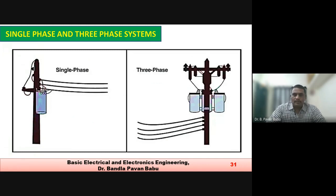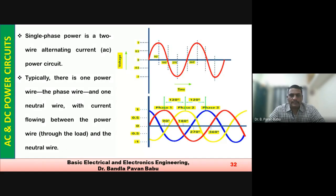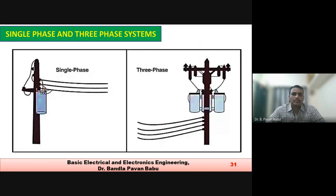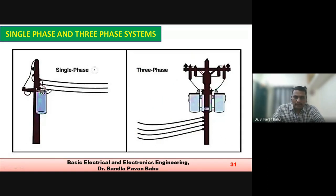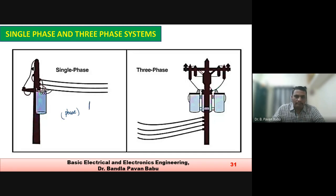Let me give a brief introduction to single phase and three phase. Single phase: a signal changes its magnitude with respect to time — continuous change of magnitude — and can be called a phase or a rotating vector. For different angles there will be a change in magnitude.